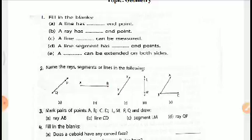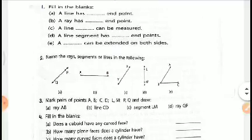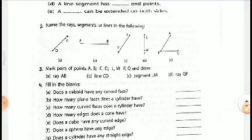Now let us come mark pairs of points and draw ray AB. You have to draw here just the vice versa of question number two.